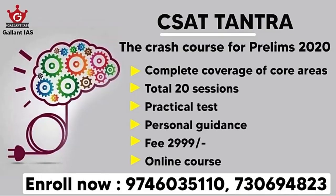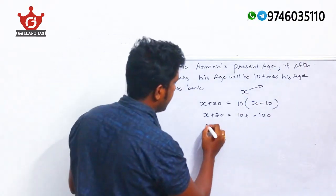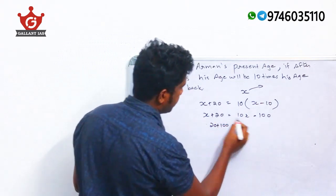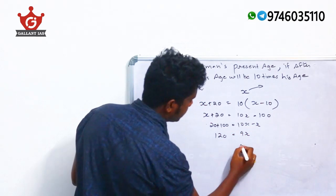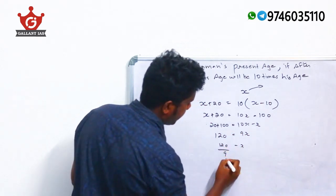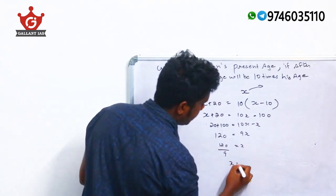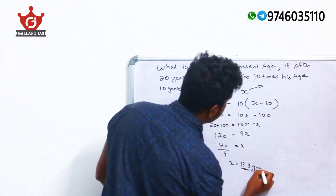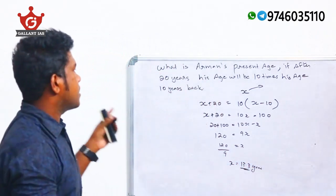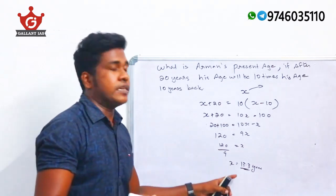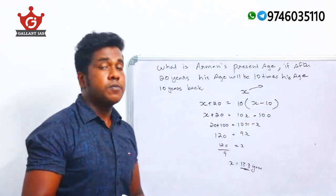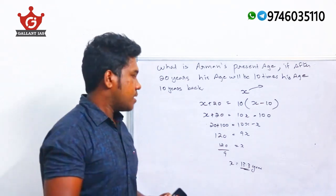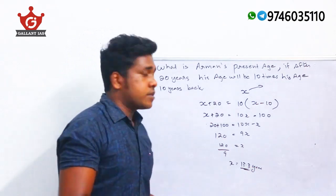Expanding: X + 20 = 10X − 100. Bringing terms to one side: 20 + 100 = 10X − X, so 120 = 9X, giving X = 120 ÷ 9 ≈ 13.3 years. Ahmad's present age is 13.3 years. Please check your options — I think it is option C.